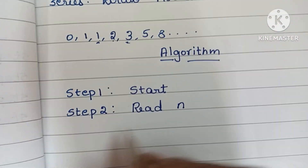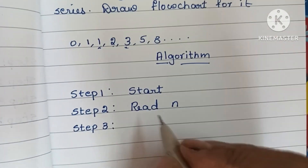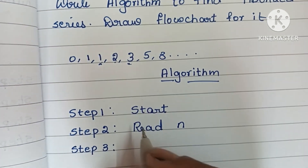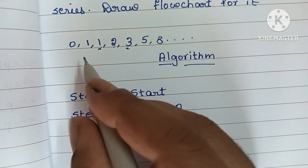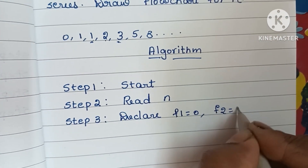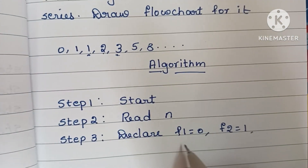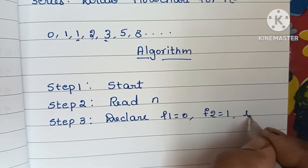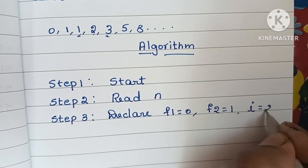Step three: we know that the first two initial numbers are zero and one, so we declare F1 equal to zero and F2 equal to one. We also initialize the iteration variable I equal to two, since the first two numbers are already set.